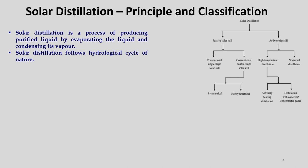The passive solar still can be classified into two categories: conventional single slope solar still and conventional double slope solar still. The conventional double slope solar still can further be classified into symmetric and non-symmetric types. Under active solar still, we have two categories: high temperature distillation and nocturnal distillation. Under high temperature distillation, we again have two categories: auxiliary heating distillation, and distillation with a collector or concentrating solar collector.